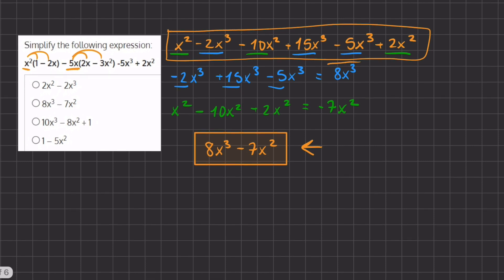Once you found this first term — 8x to the third — you could look at all your answer choices and see that only B matches. But completing the whole problem to confirm the negative 7x squared would also be a good idea. So the final answer for this problem is answer B.